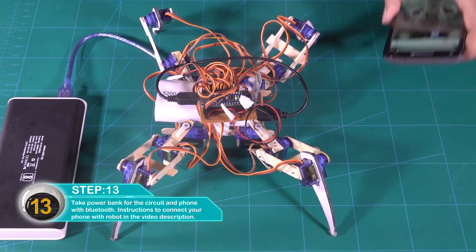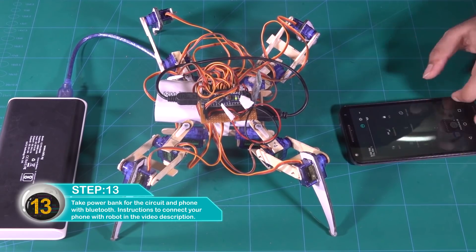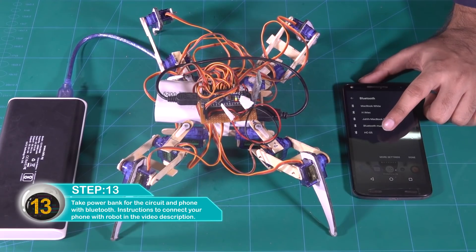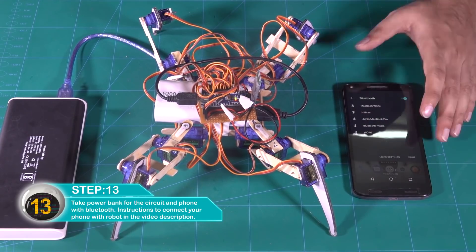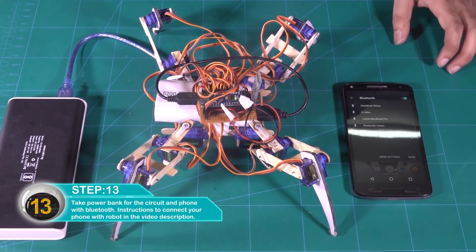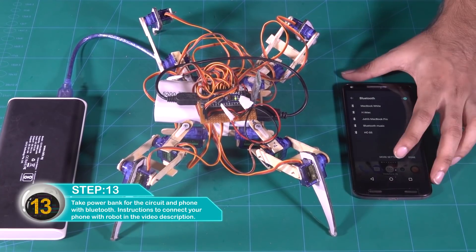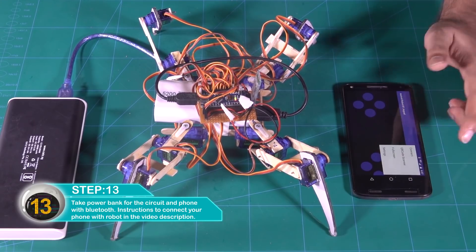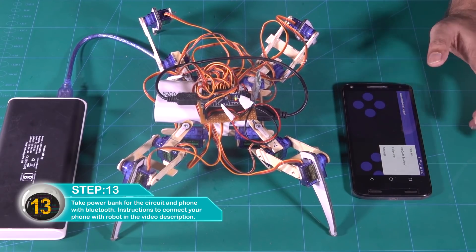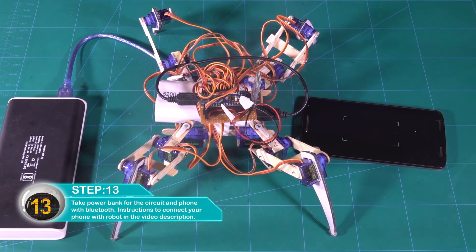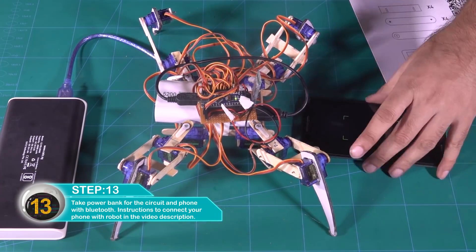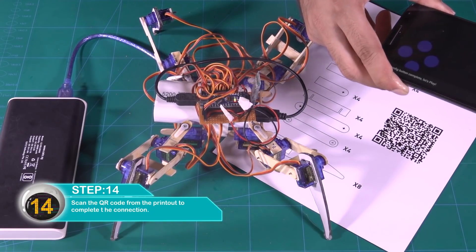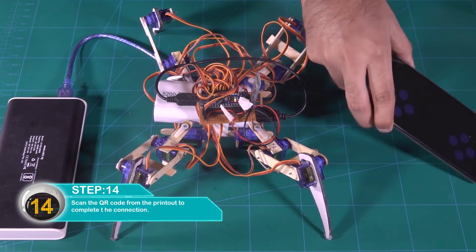Take the power bank for the circuit and the phone with Bluetooth. Instructions to connect your phone with robot are in the video description. Scan the QR code from the printout to complete the connection.